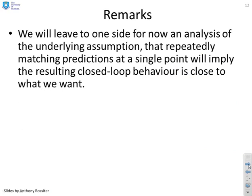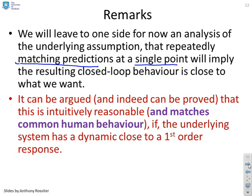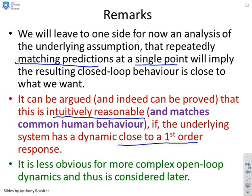So remarks. We're going to leave to one side for now analysis of the underlying assumption that repeatedly matching predictions at a single point will imply the resulting close look behavior is close to what we want. We're going to take it for granted that our human-based intuition tells us in many cases that will do a good job for us. It can be argued, and indeed it can be proved in some cases, that this is intuitively reasonable and matches common human behavior if the underlying system has a dynamic close to a first order response. However, it's less obvious for more complex open loop dynamics, and thus that's considered later on.